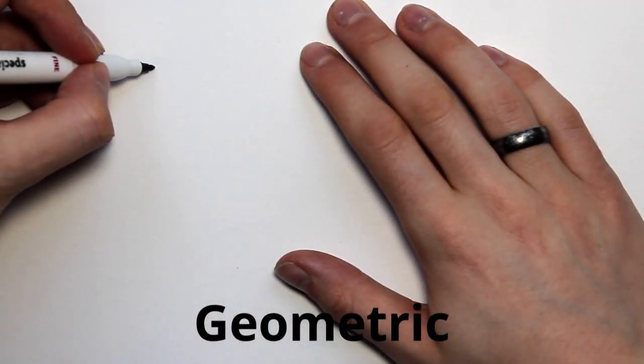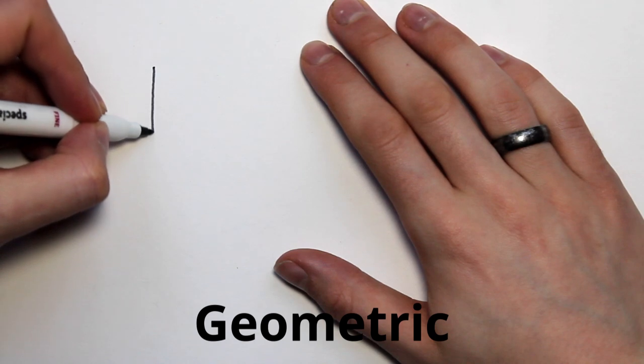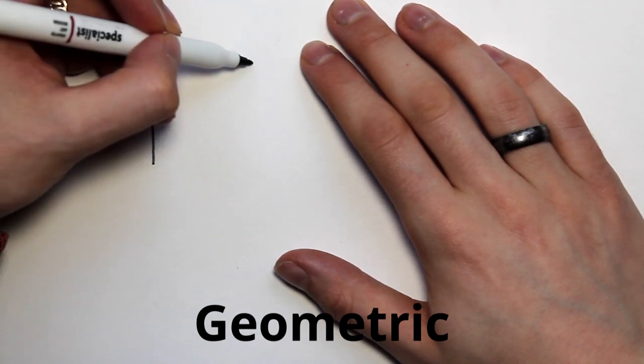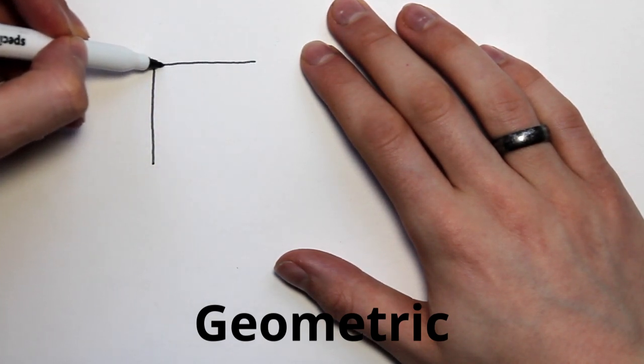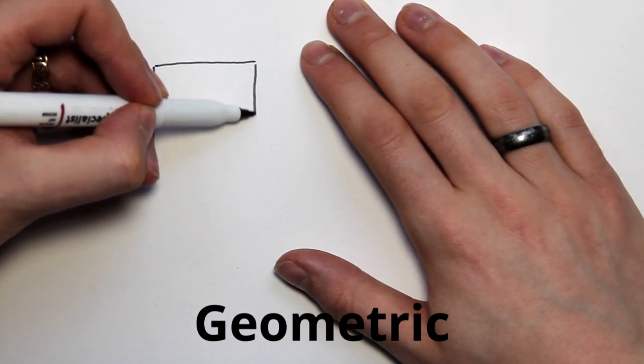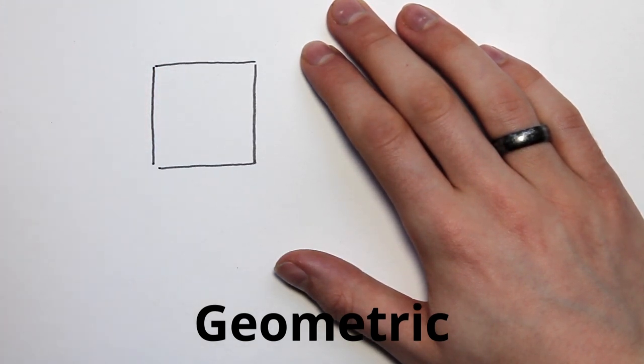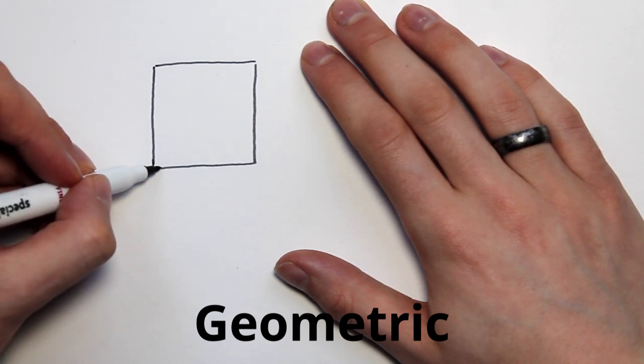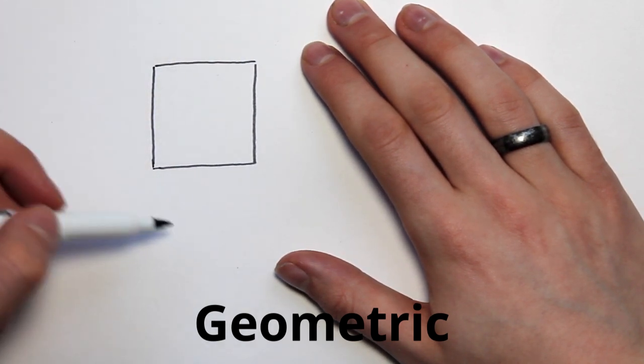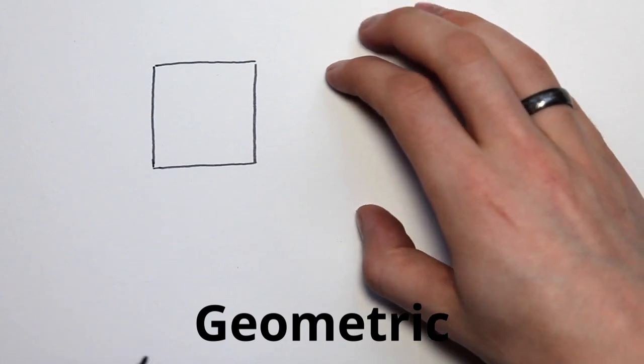Geometric shapes or regular shapes are easy to recognize. You can use maths to find information about these shapes, and these shapes generally have specific names associated with them, such as a square. Geometric shapes tend to follow mathematical rules. So for example, a square—all the sides will be all the same length.